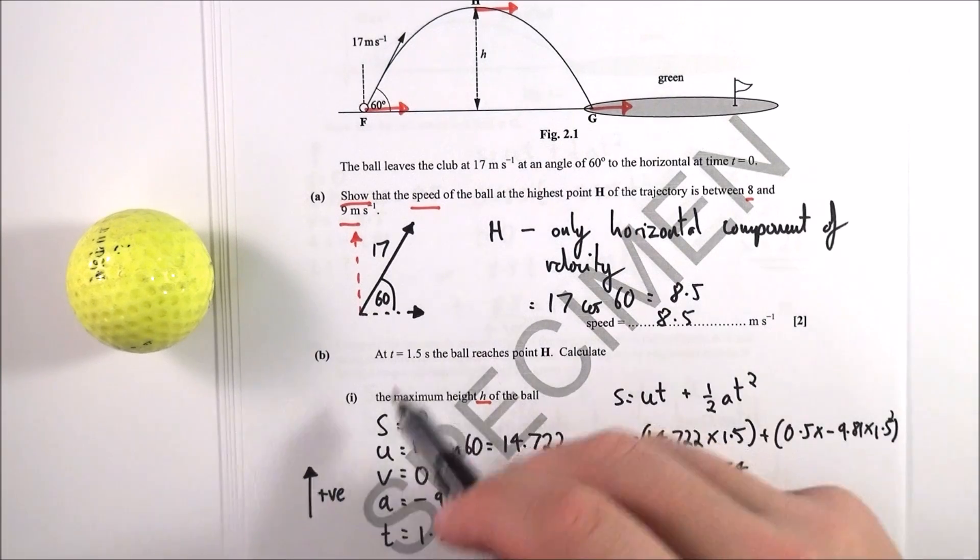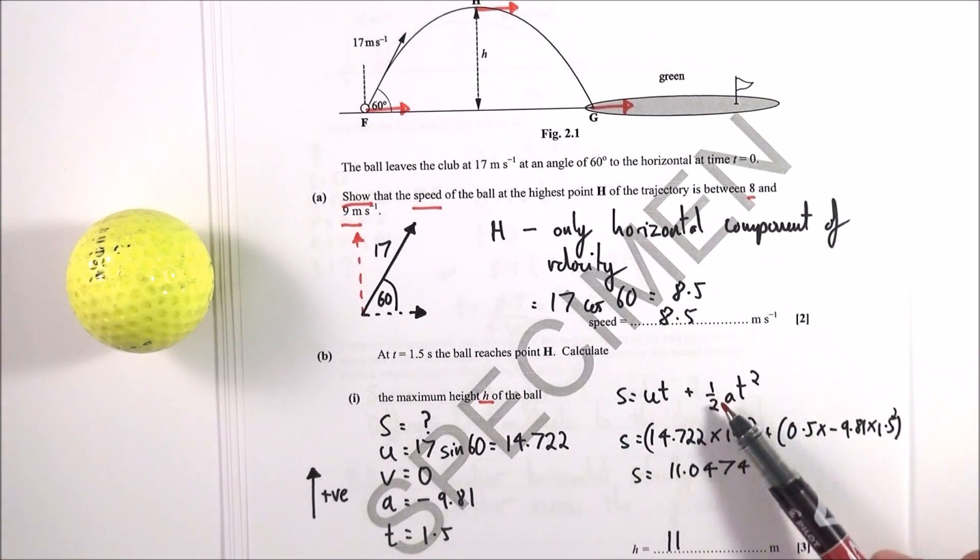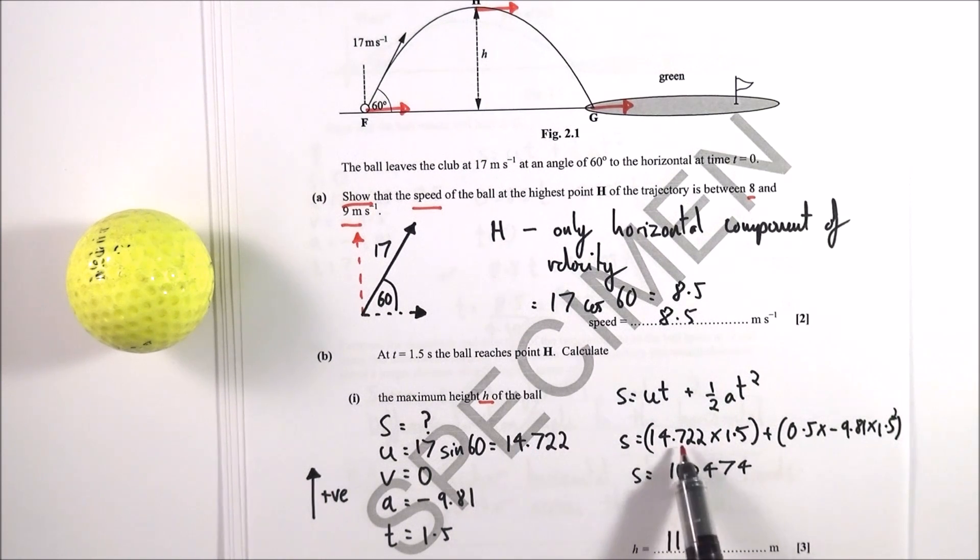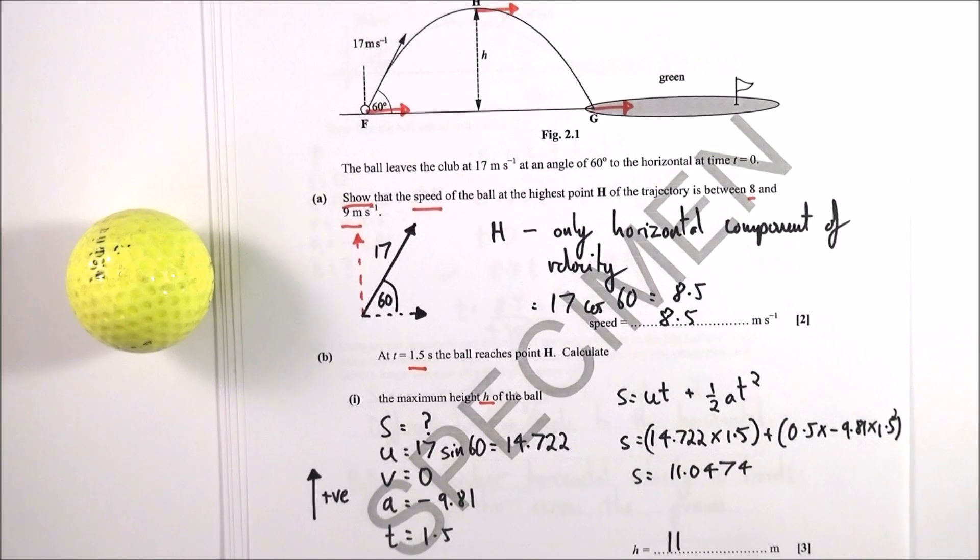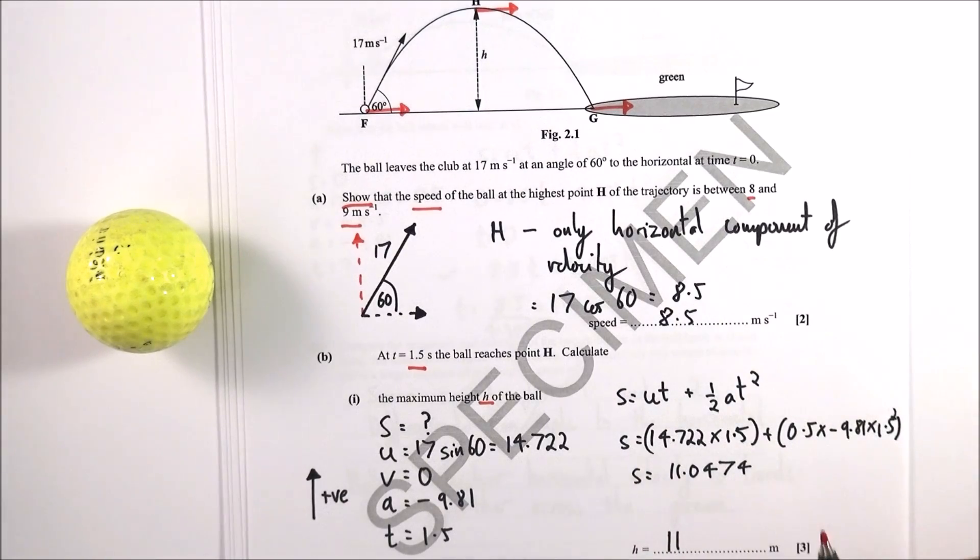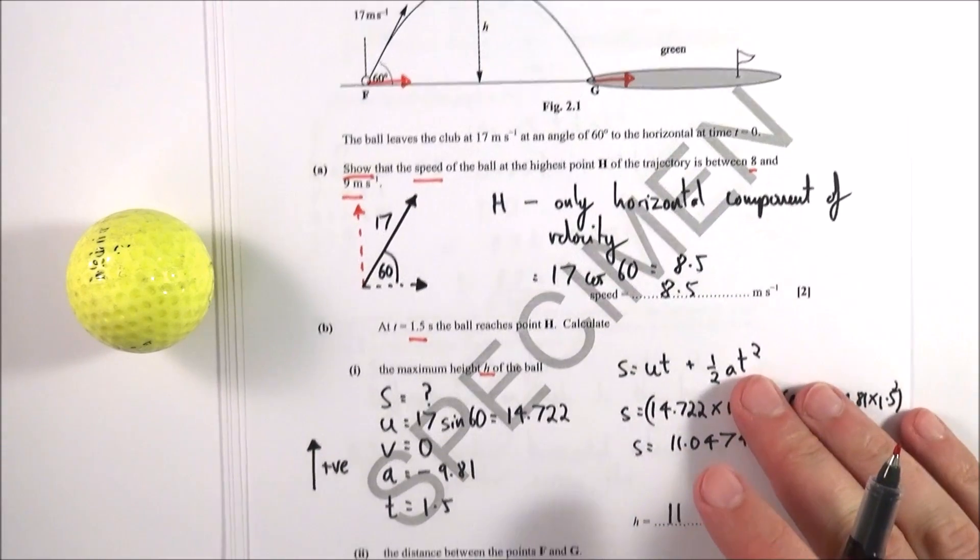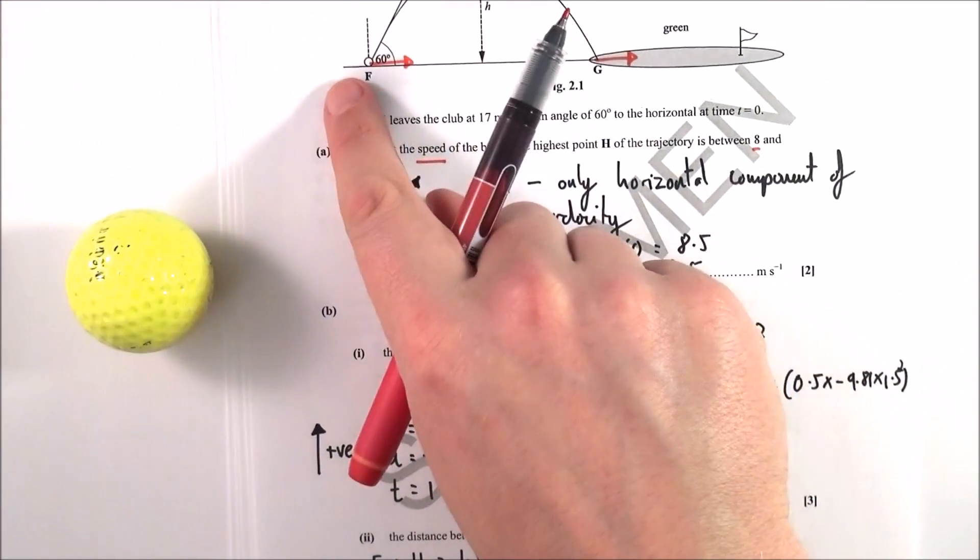So what am I looking for? I'm looking for S, so I could really use any of the SUVAT equations. I decided to use S equals UT plus a half AT squared. So I put the numbers in, so this is what I had over here, and again I used the figure that I calculated in my calculator. When I put this into my calculator, I found the answer is 11.0474, which to two significant figures, which is the same as the data in the question, was 11 meters. I wrote it down like that in case I had to use it in a subsequent calculation, so I didn't round down too early.